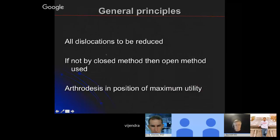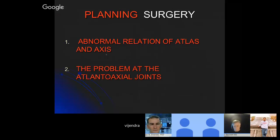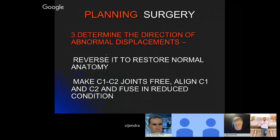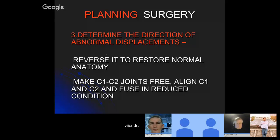Coming back to management: all dislocations should be reduced. If they cannot be reduced by closed method, they should be reduced by open method, and then arthrodesis should be done in the position of maximum utility. For surgical planning we must see all CT scans in 3D, sagittal, and coronal to create a 3D understanding. We must find out the abnormal relationship between atlas and axis, determine the direction of abnormal displacement — whether posterior, rotated right, rotated left, or upward — then reverse these displacements to restore normal anatomy by opening the C1-C2 joints, aligning them, and fusing in the reduced position.